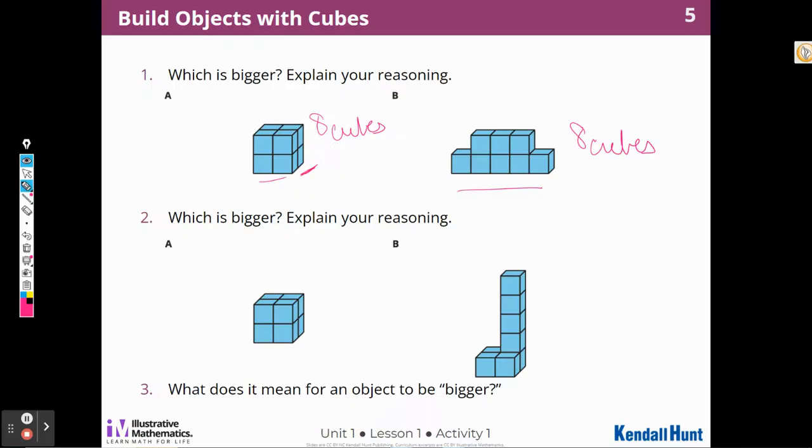And then when I look at number two, I notice the same thing. This one has eight cubes. It's short and wide. This one has the same width, the same length in the front, but it's tall. How many cubes does B have? Well, I think there might be four here, five, six, seven, eight. Oh, it has eight cubes as well. So all four of these objects have eight cubes.